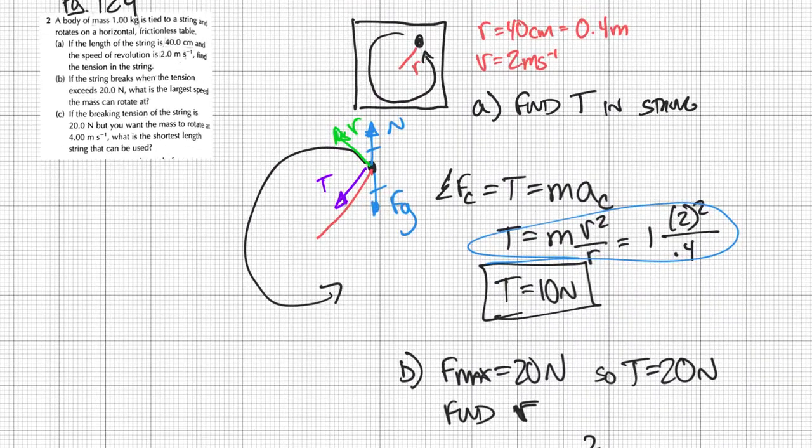Lastly, last question says the breaking tension is 20 newtons still. But now you want your mass to rotate at 4 meters per second. So now we need to change our length of the string that can be used. So we're going to use this same setup here, except now we're just simply going to solve for r.